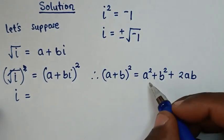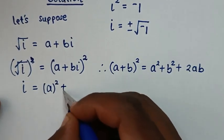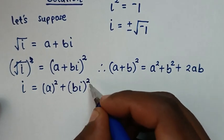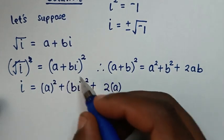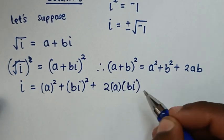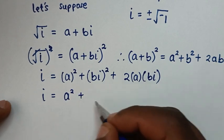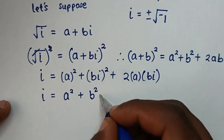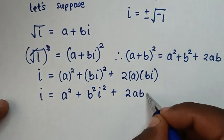By applying this form: a squared gives us a², then b squared gives us (bi)², then plus 2ab gives us 2a·(bi). Then it will be: a² plus, taking the square inside, b²i², then plus 2abi.